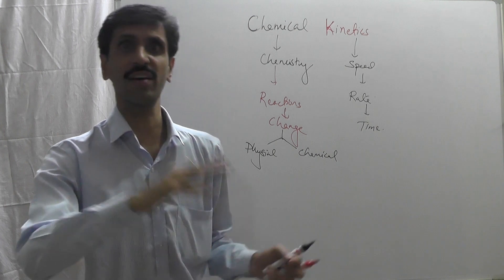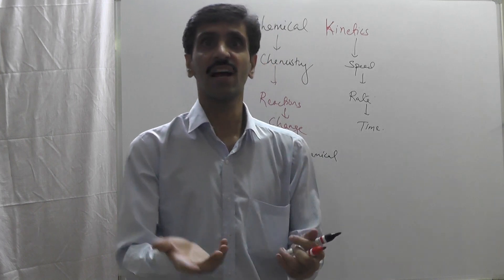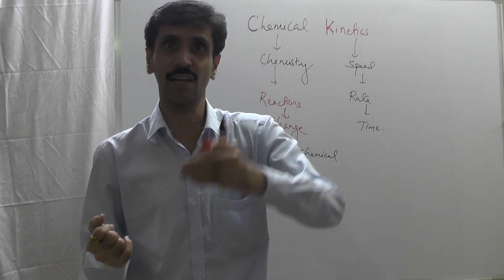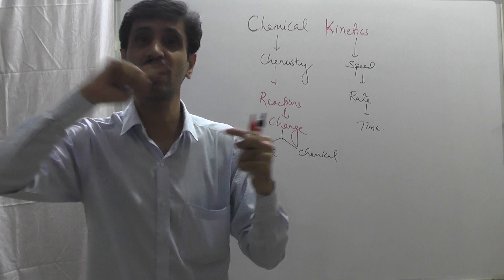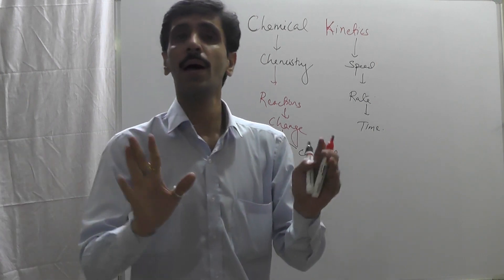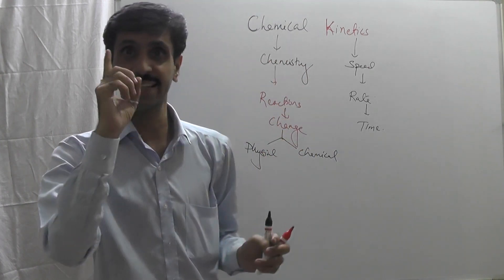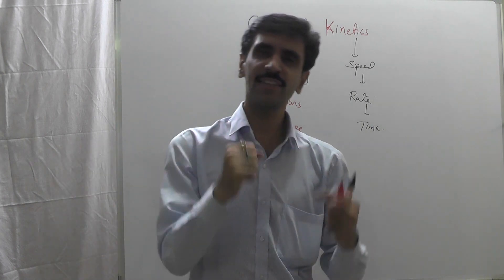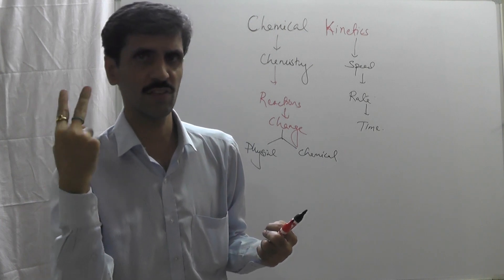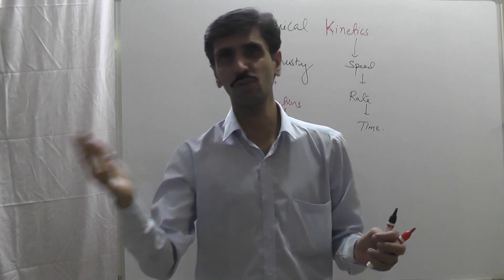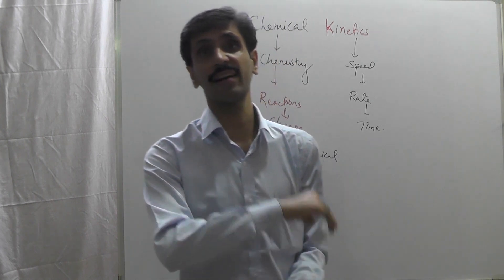Generally we focus on chemical reactions and how the change takes place in what amount of time. In chemical kinetics we are not ignoring physical reactions, but we primarily concentrate on chemical reactions. When we talk about changes, there is a requirement of two species: the initial one and the final one.